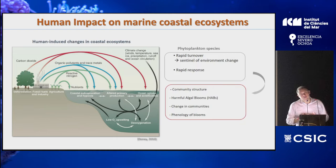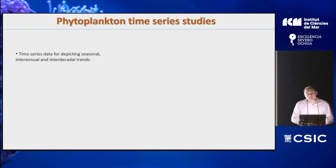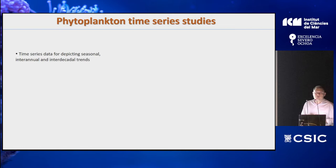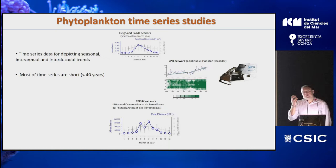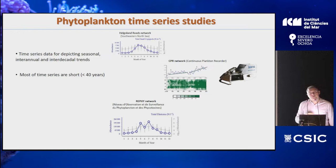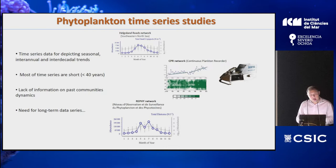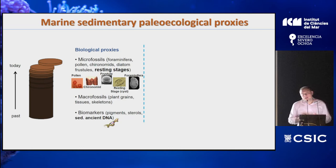To study changes in phytoplankton communities over time, we classically use time series data. But the limitation of time series data is that they have only been constructed starting more or less 40 years ago — there are examples in the continuous plankton recorder in England or France. These time series are short, so 40 years is not sufficient to go back into the past to cover the full Anthropocene period and see what community composition looked like before human pollution. That's where paleoecology can help, by creating a baseline of biodiversity before this pollution occurred.